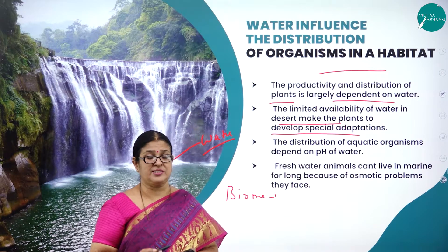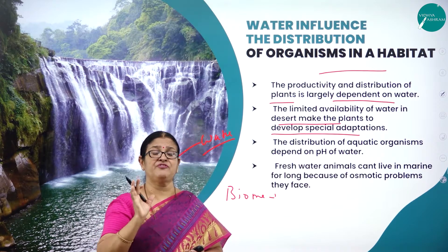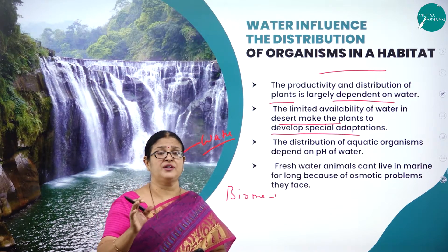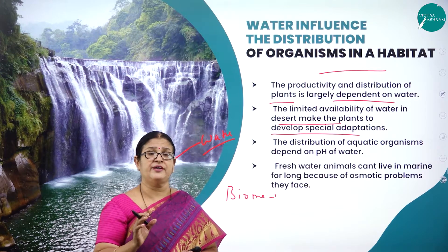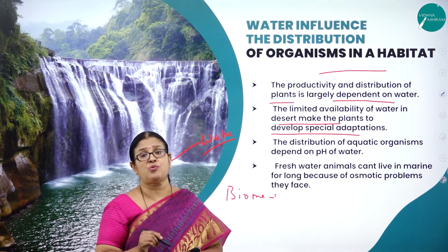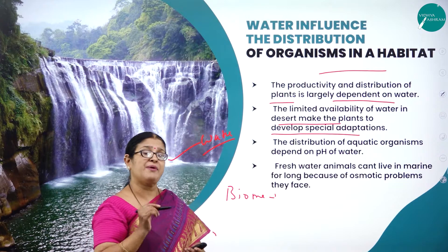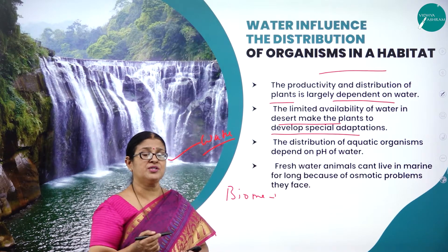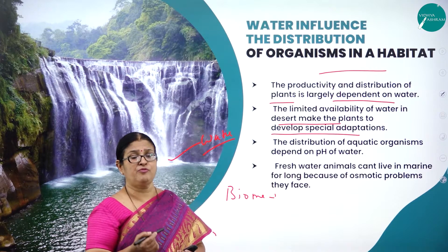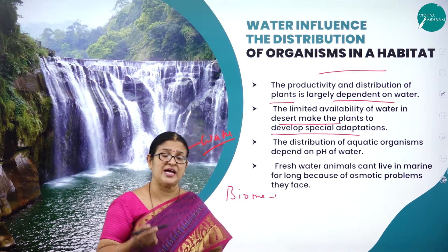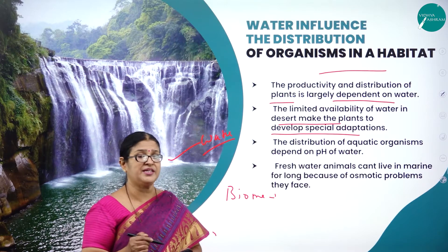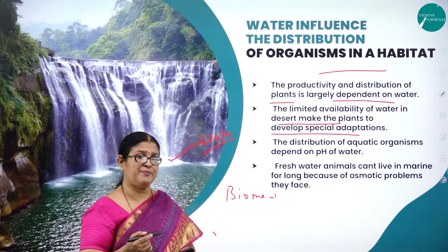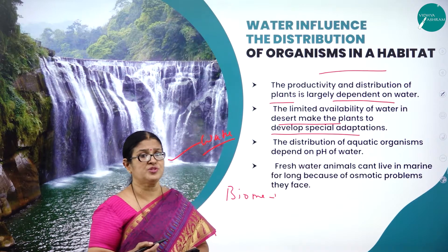For example, the Opuntia cactus has a flat green leaf-like structure where the stem itself is modified, and it has thorns to avoid browsing animals. Such adaptations illustrate how plants and animals living where water is limited develop strategic adaptations to overcome scarcity.